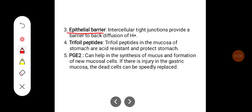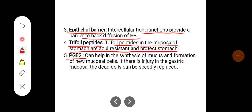Epithelial Barrier: The intracellular tight junctions provide a barrier to back diffusion of H+ ions. The trifoil peptides in the mucosa of the stomach are acid resistant and protect the stomach. Prostaglandins E2 can help in the synthesis of mucus and formation of new mucosal cells. If there is injury in the gastric mucosa, the dead cells can be speedily replaced.